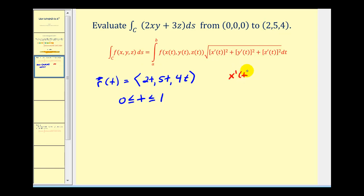This also tells us that x prime of t would be equal to two, y prime of t would be equal to five, and z prime of t would be equal to four. Let's go ahead and set this up in terms of t.